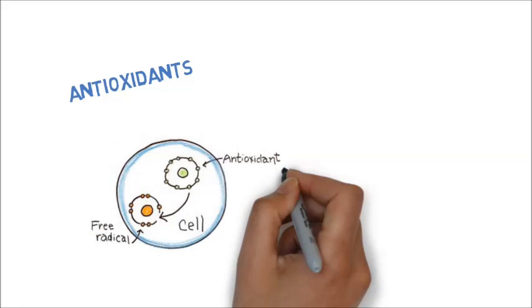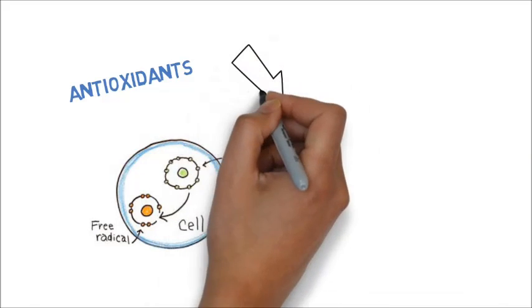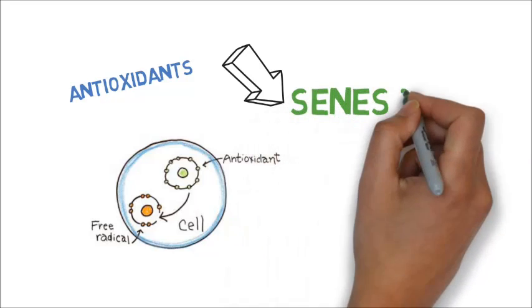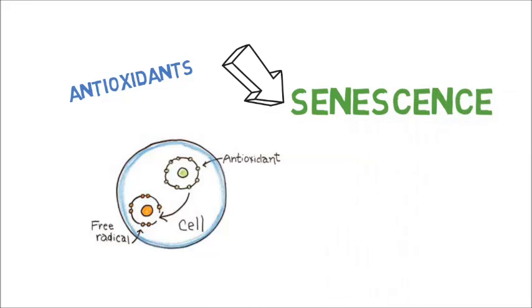Antioxidants are molecules that inhibit the oxidation process of other molecules. By doing so, antioxidants such as vitamin C will terminate the chain reactions caused by free radicals, preventing senescence from happening and delaying the loss of body functions.